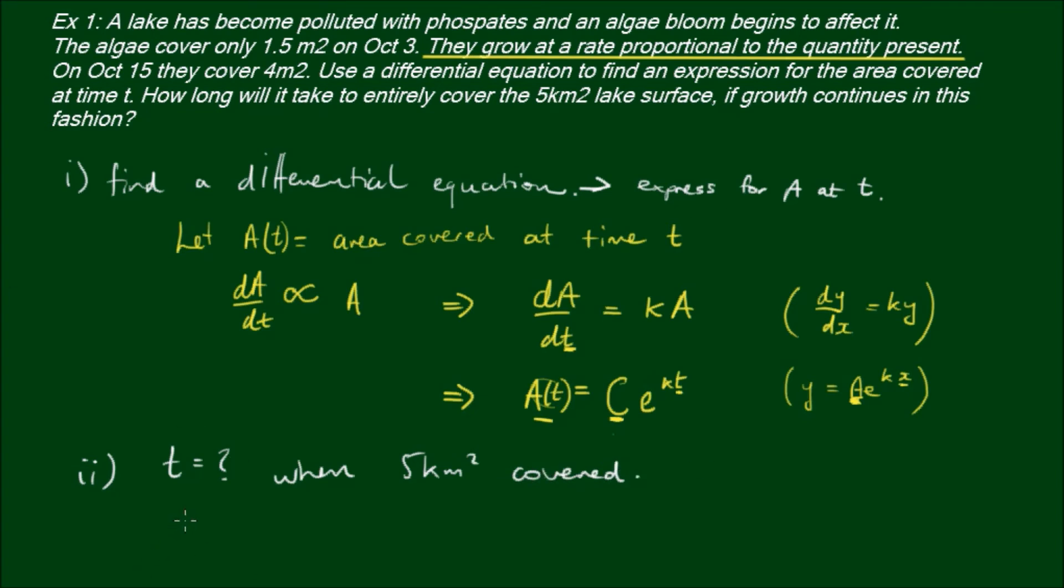To solve this, initially when t equals 0, which is on the 3rd of October, the area was 1.5 meters squared. Later, so on October 15th, so that would be about let's say 12 days later, on 15th of October the area had grown to 4 square meters.